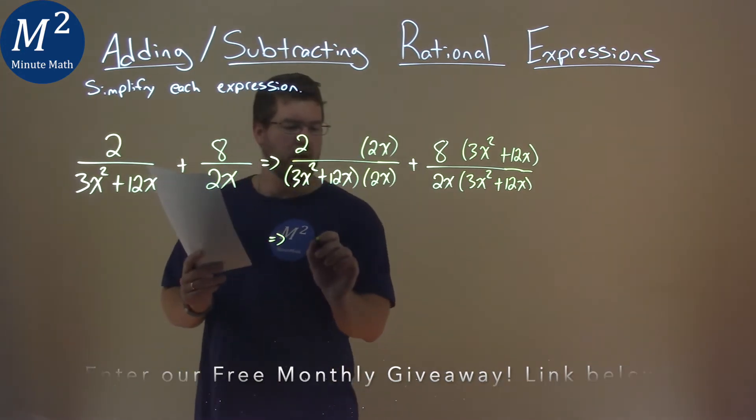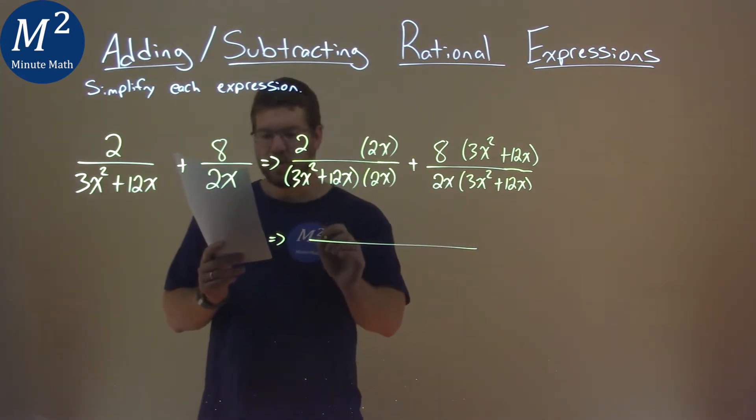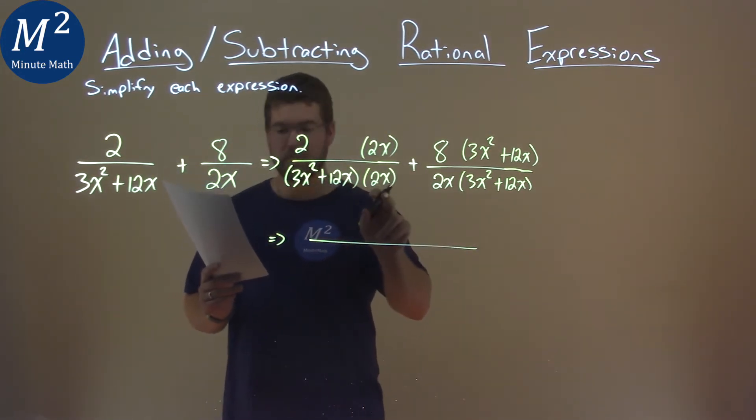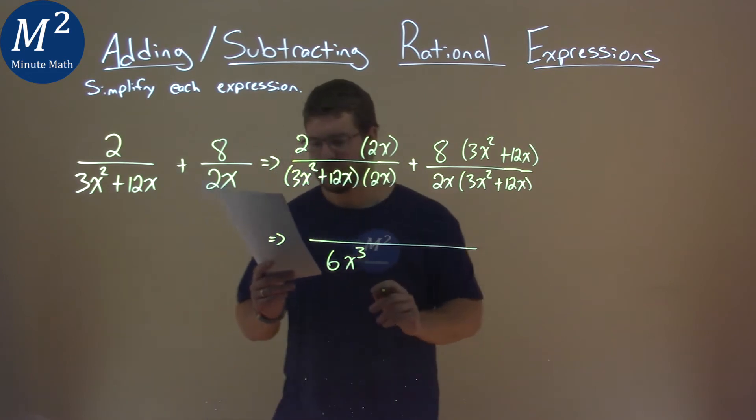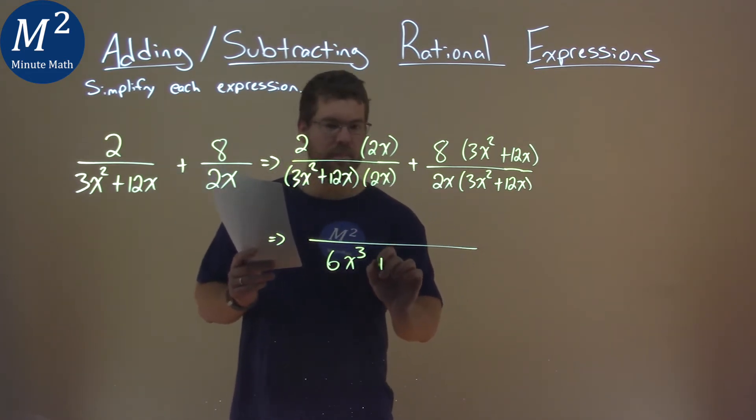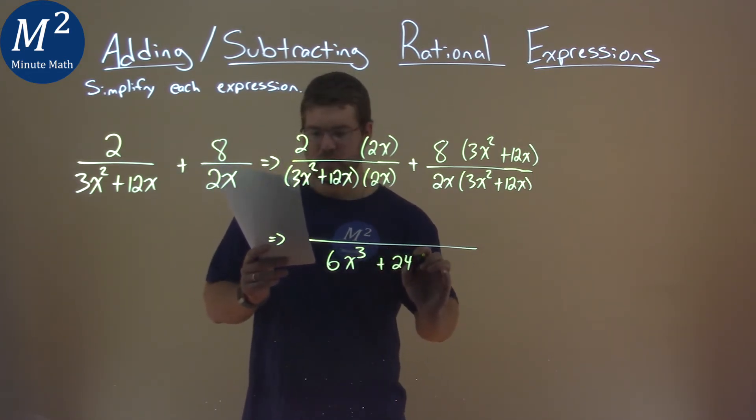I'm going to actually multiply that out. 3x squared times 2x is 6x to the third power, and 12x times 2x is 24x squared.